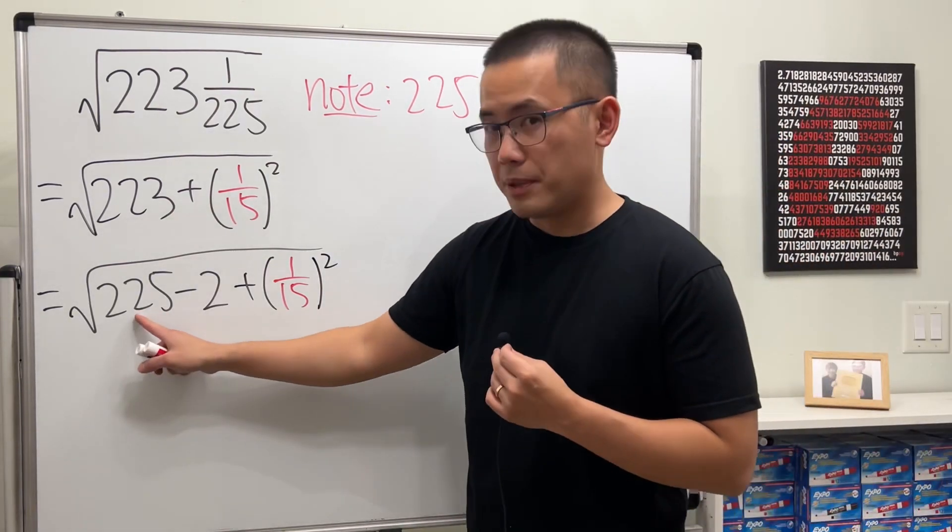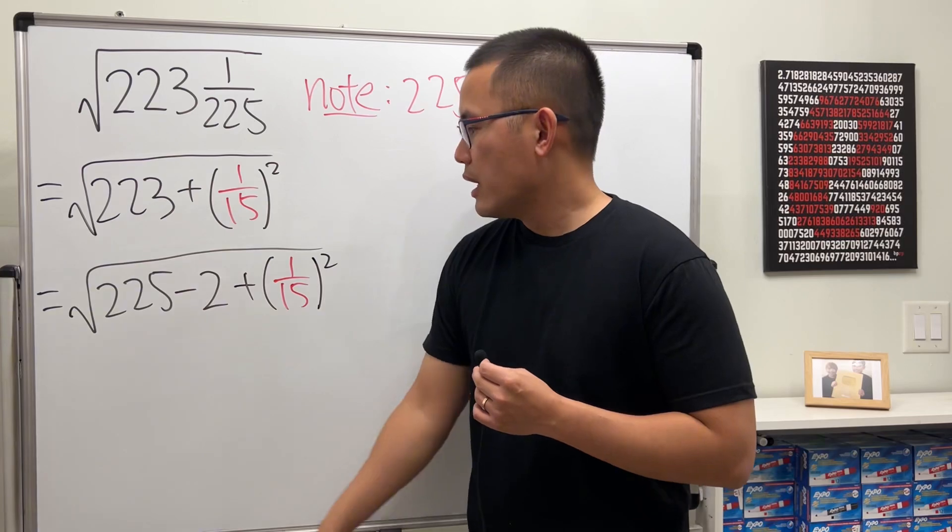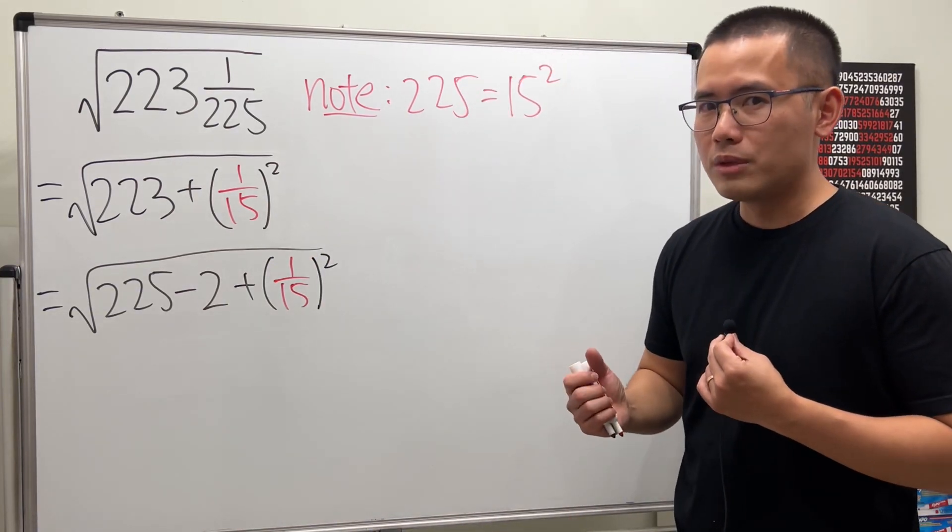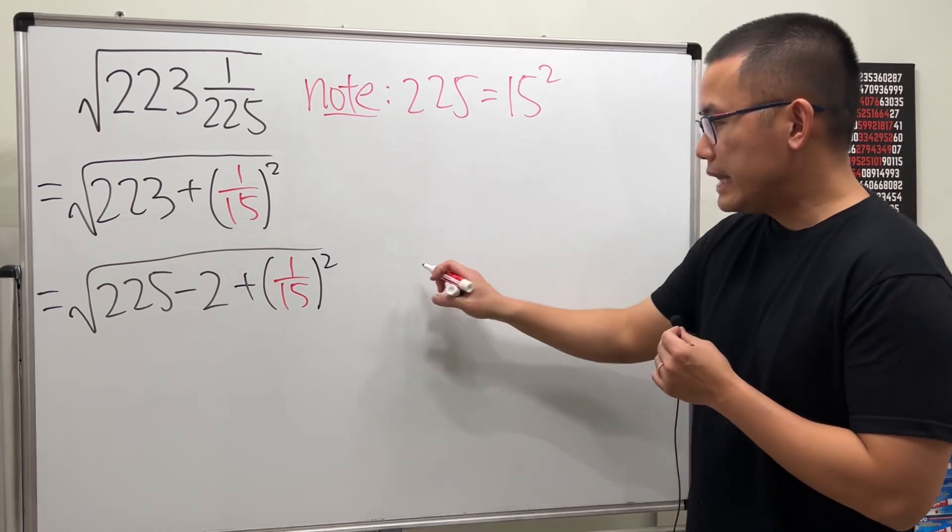Now, we have this being a perfect square. It's just 15 squared. And then, at the end, we also have a perfect square. So, in fact, we can use one of the formulas that we learned from algebra. And that's this one.